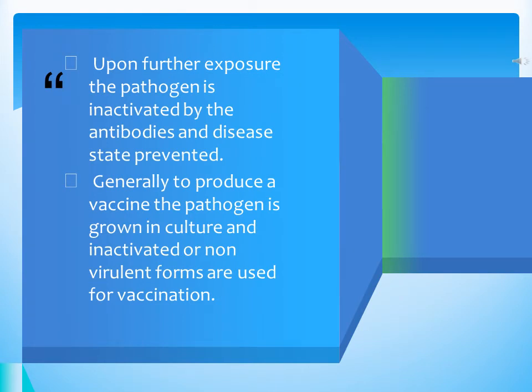After vaccination, the host body gradually starts producing antibodies and fighting against specific diseases. Whenever there is re-exposure of the same pathogen in the host body, it is inactivated by the antibodies produced by the host, and the disease state is prevented. The cell lines responsible for this function are the memory B cells. When an antigen first enters the body, B cells memorize and recognize it, so upon re-exposure the body can take the necessary action accordingly.